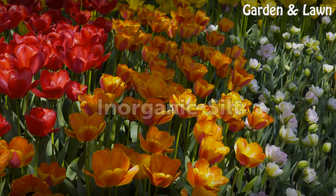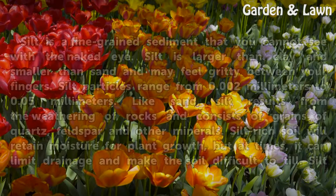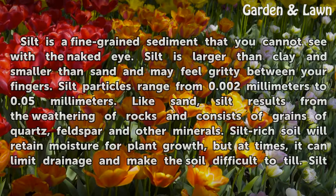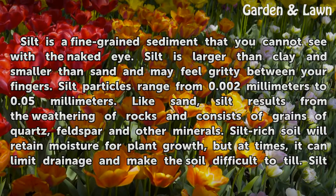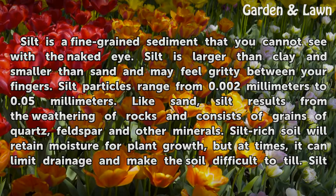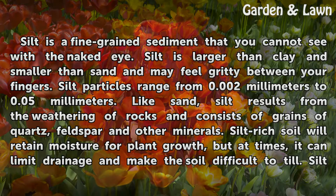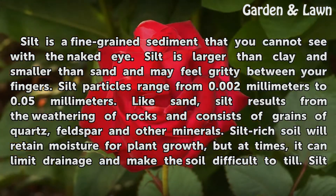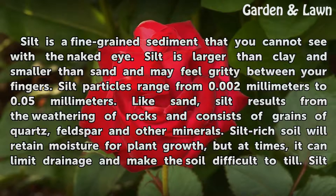Silt is a fine-grained sediment that you cannot see with the naked eye. Silt is larger than clay and smaller than sand and may feel gritty between your fingers. Silt particles range from 0.002 mm to 0.05 mm. Like sand, silt results from the weathering of rocks and consists of grains of quartz, feldspar, and other minerals.